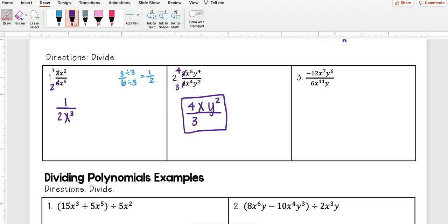Okay try this last one. So I'm going to first deal with my numbers out in front. I have negative 12 over 6. Well 6 actually divides evenly into negative 12. So I'm just going to have a 1 on bottom. Negative 12 divided by 6 I get negative 2.